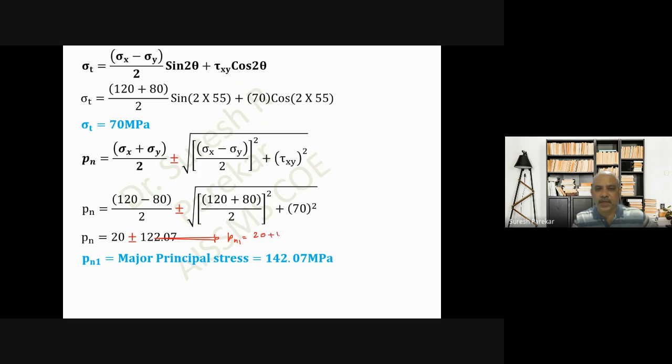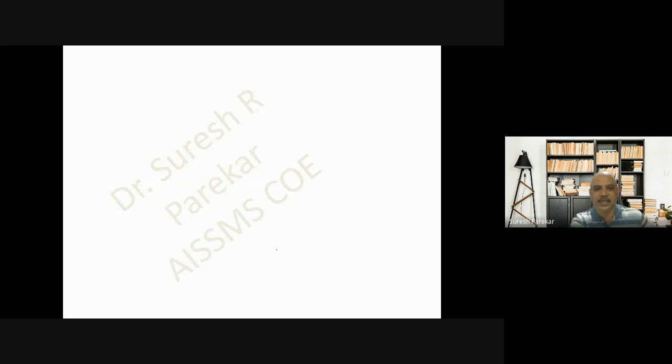So 142, -102, 70, and -76. Then we will go with 1 cm = 20 MPa because we have 120, and we have to plot on both sides. We have OA that is 6 centimeters.